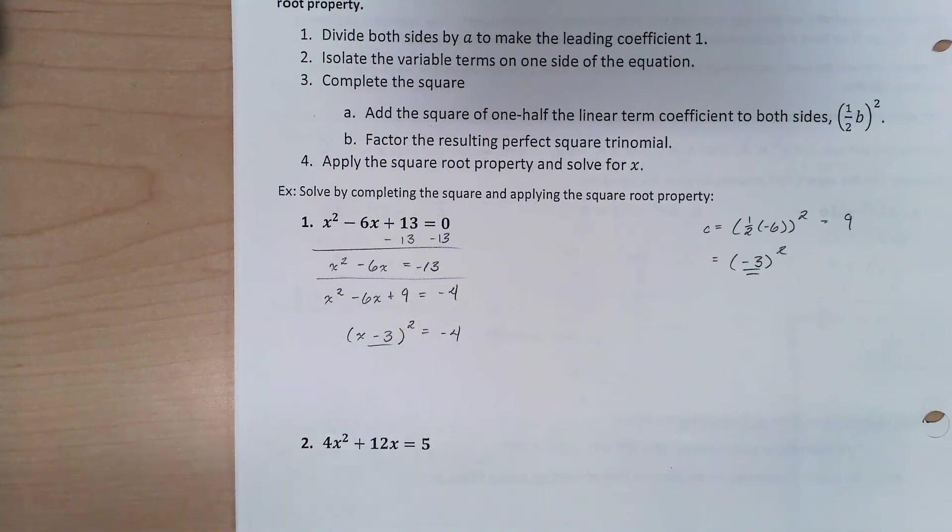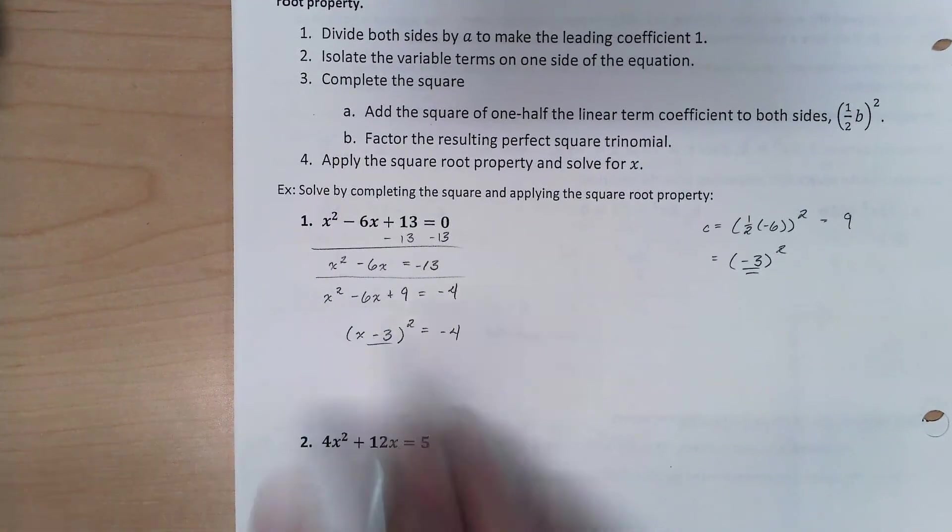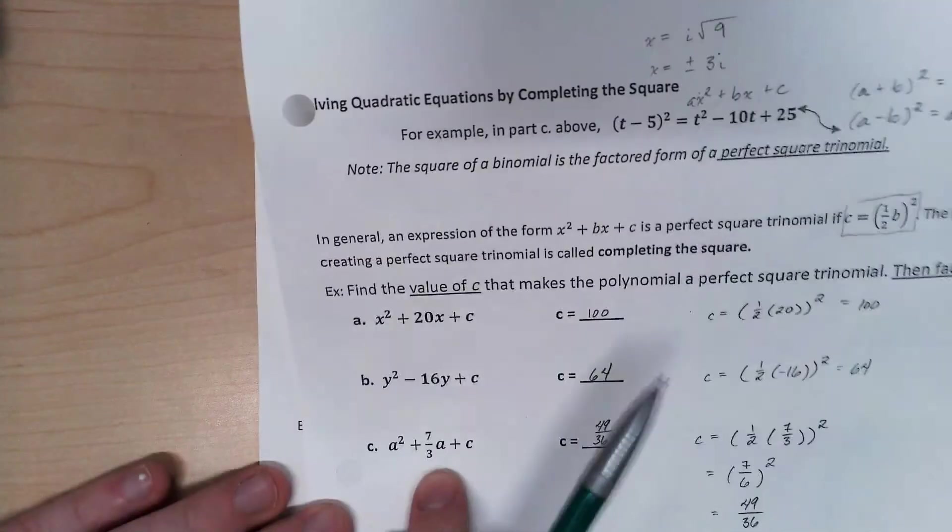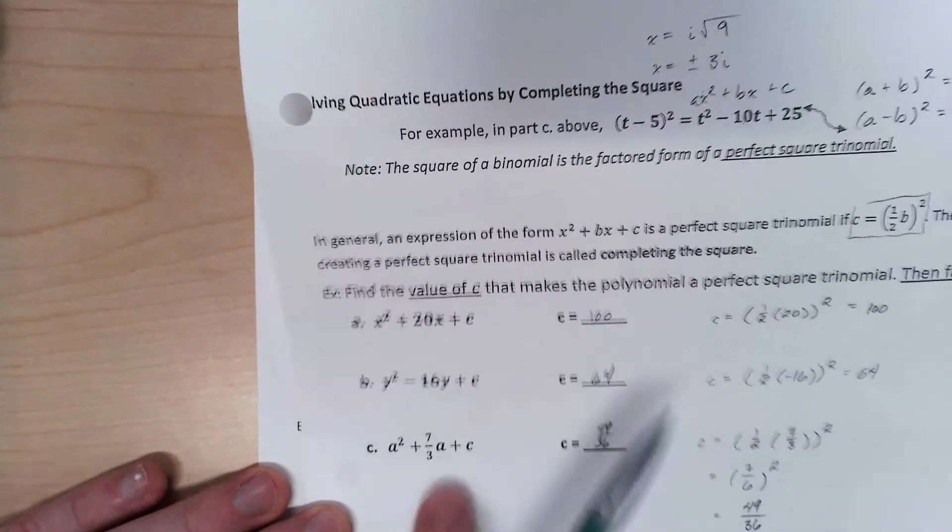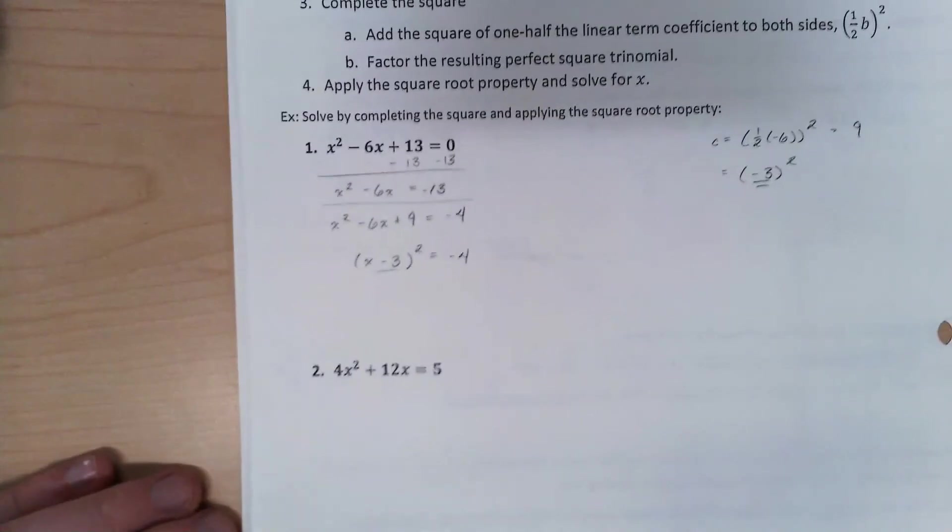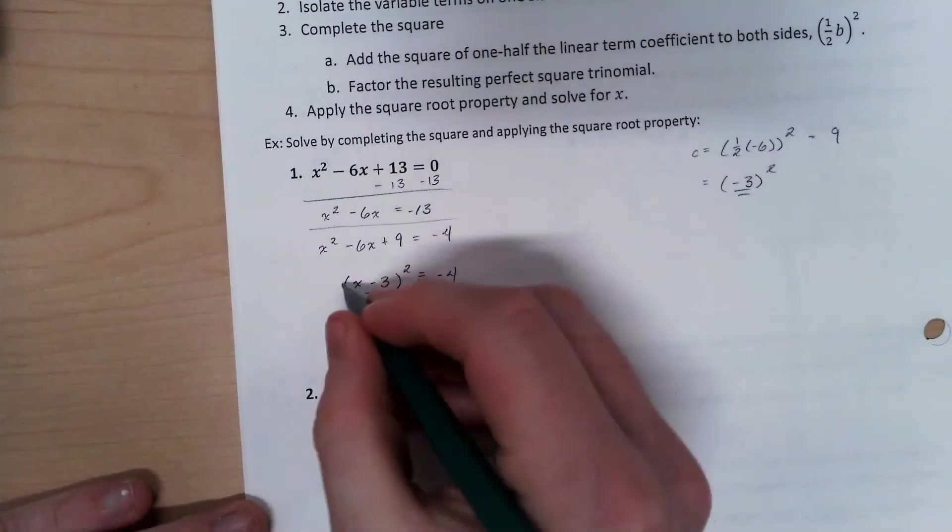That may not appear super useful on problems like this. You probably could have figured for yourself the factors of 9 that add to negative 6. But if you remember from yesterday, when we had fractions that we were dealing with, it still applies with the fractions. So it saves us a lot of trouble trying to figure out how on earth we're going to factor fractions.